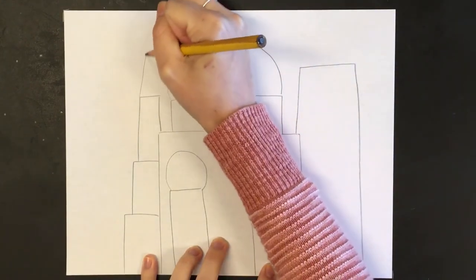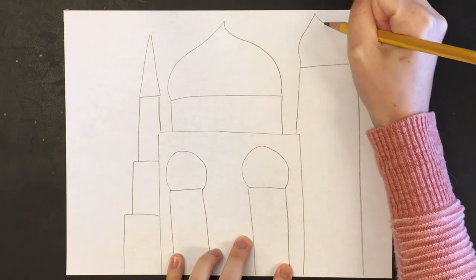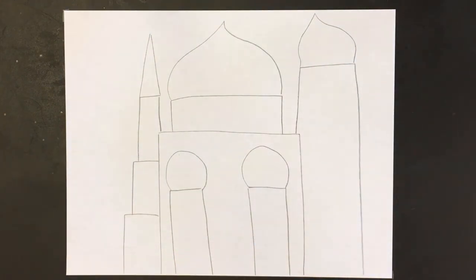So maybe a pointy roof up here, and then just one more roof over here. And once again, don't worry if it's not perfect—this is totally your design.